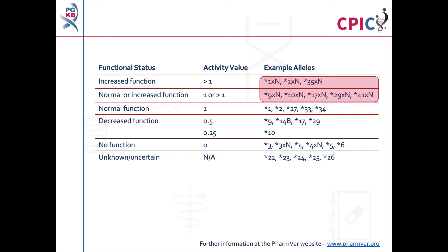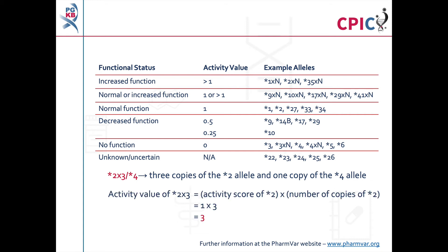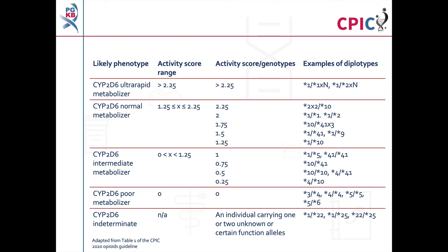It is important to note that patients can carry multiple copies of CYP2D6. Reports in the scientific literature have described cases where up to 13 copies of CYP2D6 were present in a patient's genome. Alleles present in multiple copies are given the suffix xN, where N is the number of copies. For example, a patient with the genotype star 2x3 / star 4 has 3 copies of the star 2 allele and 1 copy of the star 4 allele. The activity score of alleles present in multiple copies is calculated by multiplying the activity score for that allele by the number of copies — in this case, star 2x3 gives a score of 1 × 3 = 3. Further information about CYP2D6 alleles can be found at the PharmVar website.